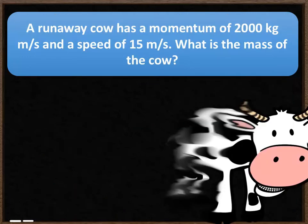The next question involves a runaway cow. It has a momentum of 2,000 kilogram meters per second and a speed of 15 meters per second. Using the formula momentum equals mass times velocity, pause the video and try to work out the mass of the cow.